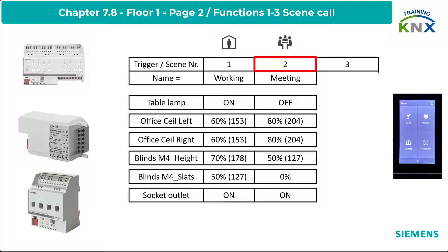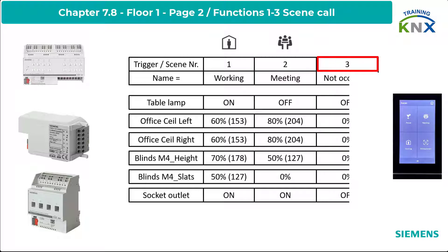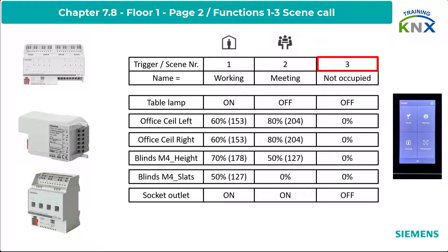Scene 3: All values set to 0, off, or 0%. Name: Unoccupied. Symbol: Unoccupied. Now let's do the ETS configuration.